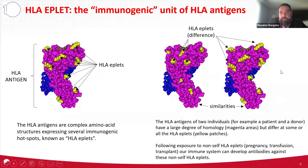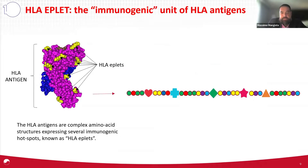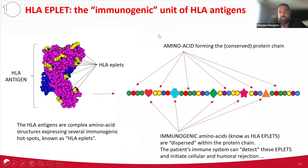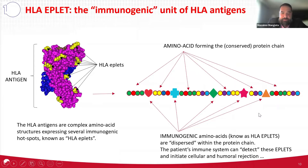Following exposure to a non-self HLA antigen, your immune system can detect those differences and develop an immune response against it. To give a better view of these eplets, let's imagine we can unravel the HLA molecule structure into a longitudinal chain. This chain is composed of a group of conserved amino acids forming the core structure, and within this core structure there are dispersed immunogenic amino acids — the eplets. If your immune system detects them as non-self, this is what can cause rejection.